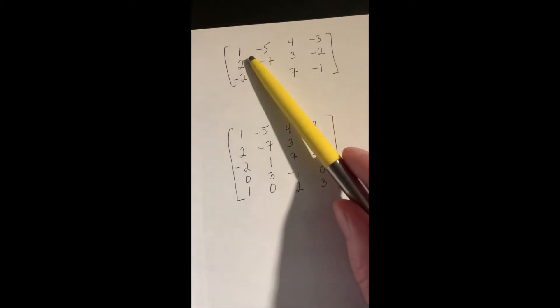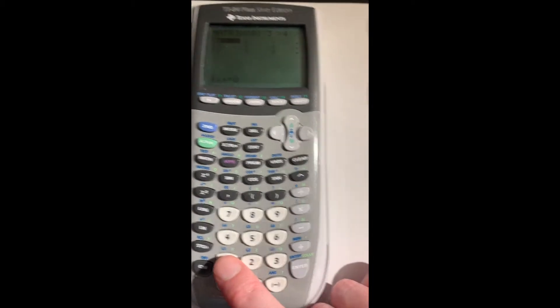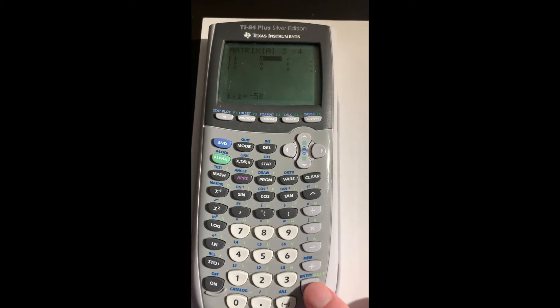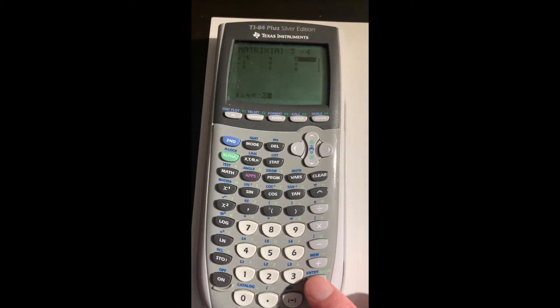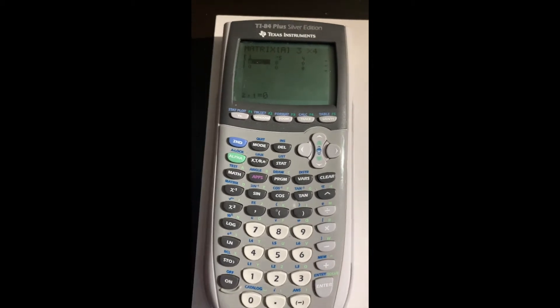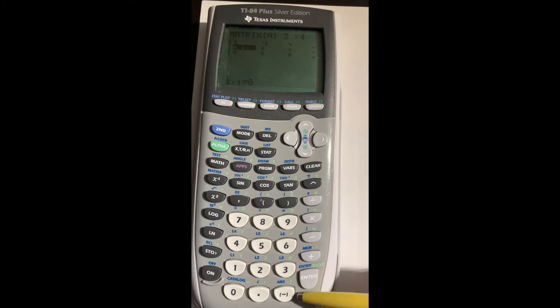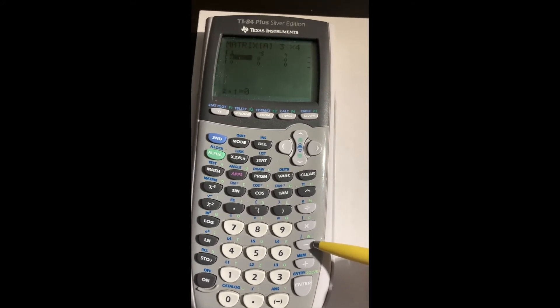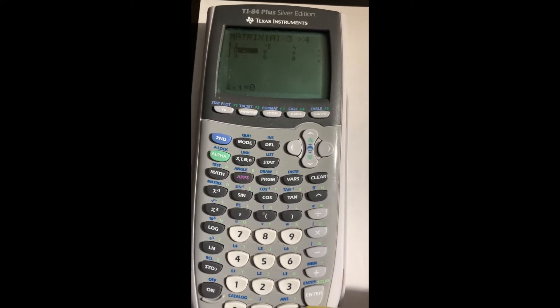Now we go ahead and put these numbers in across each row, row by row. So we've got 1 minus 5, 4 minus 3. Notice I use this white button down here for negative numbers, not this gray negative button, which is for the operation of subtraction. You need to use the white one to enter a negative number.